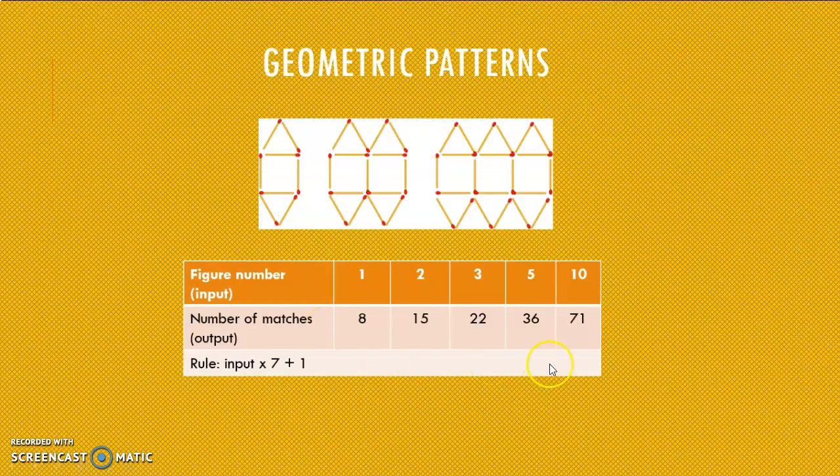And then I just gave you another example again. I hope you find this helpful. Remember, always find your rule, make sure it applies to all of them. They usually give you the first three or more input values and output values. They really can't give you less, otherwise, it's a bit difficult to find your rule. Make sure your rule applies to all of them, and then you can apply it to any other figure number or input value to find your answer. Stay safe, and we'll talk again next time.